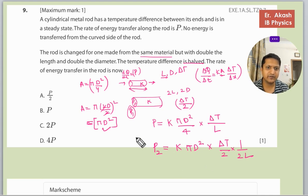If you divide both the equations, you will see that P upon P2 will be, we don't have much space here, we will divide here only. K with K, pi with pi, D squared with D squared, delta T with delta T.